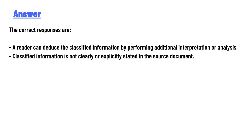The answer to the question is: a reader can reduce the classified information by performing additional interpretation or analysis; classified information is not clearly or explicitly stated in the source document; and receive training on derivative classification principles. Those are the correct answers.